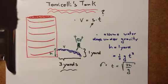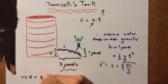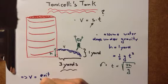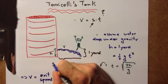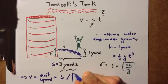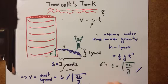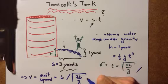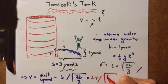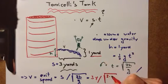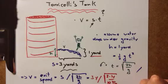So, substituting with the numbers we've got, we then obtain for the speed with which the water gushes out of the tank, V, the exit speed, is equal to S, which is the distance, three yards, divided by the square root of what we've just obtained, the time, 2h divided by gravitational acceleration. If we substitute three yards divided by the square root of two times one yard, divided by 10 meters per second squared. What is that?